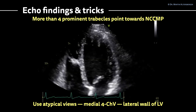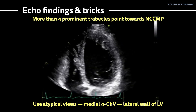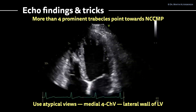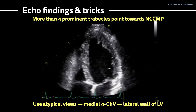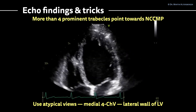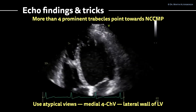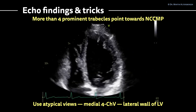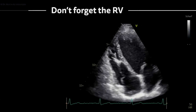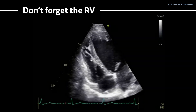Especially in young patients with reduced left ventricular ejection fraction, use atypical views. Move the transducer more medially in an apical four-chamber view to better display the lateral wall of the left ventricle. This helps optimize Doppler alignment and better visualize trabeculations or pathologies of the lateral wall in apical imaging.